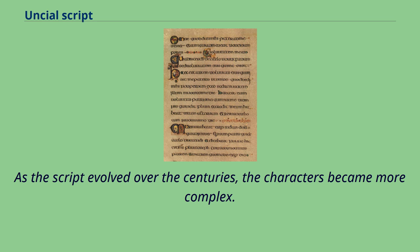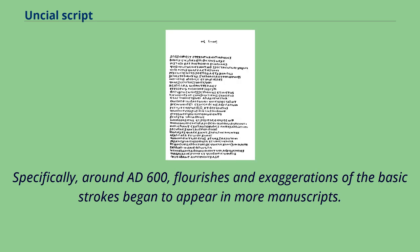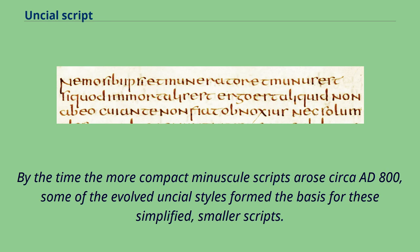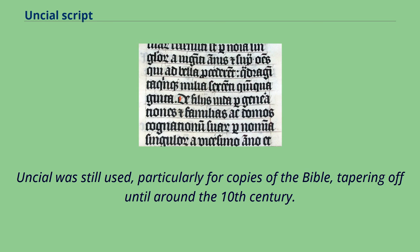As the script evolved over the centuries, the characters became more complex. Specifically, around AD 600, flourishes and exaggerations of the basic strokes began to appear in more manuscripts. Ascenders and descenders were the first major alterations, followed by twists of the tool in the basic stroke and overlapping. By the time the more compact minuscule scripts arose circa AD 800, some of the evolved Uncial styles formed the basis for these simplified, smaller scripts. Uncial was still used, particularly for copies of the Bible, tapering off until around the 10th century.